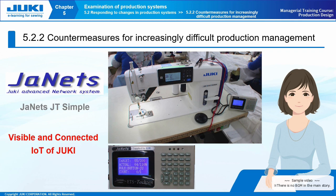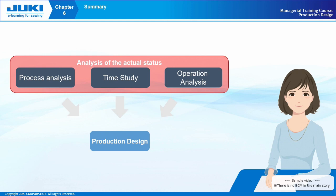With the knowledge learned in this course, you can utilize the system more effectively and promote improvement activities at your factory. In this course, process analysis, time study, and operation analysis are only outlined, so it is recommended to study them as well as production design. In addition, factory diagnosis support using the analysis of the actual status by Juki staff is available, so please feel free to contact Juki. Let's aim for a factory with a high management level together with Juki. This concludes the Juki eLearning managerial training course on production design. Thank you for taking this course.